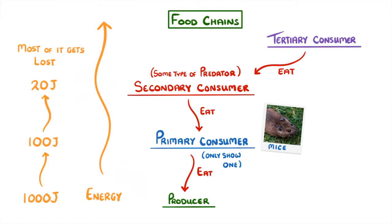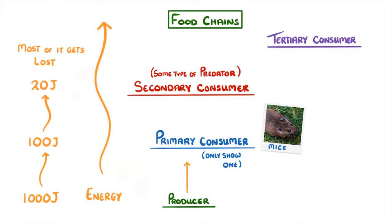Whenever you're drawing out a food chain, the arrows between the different levels actually represent the flow of energy up the chain, so we need to get rid of these and draw them the other way around like this.